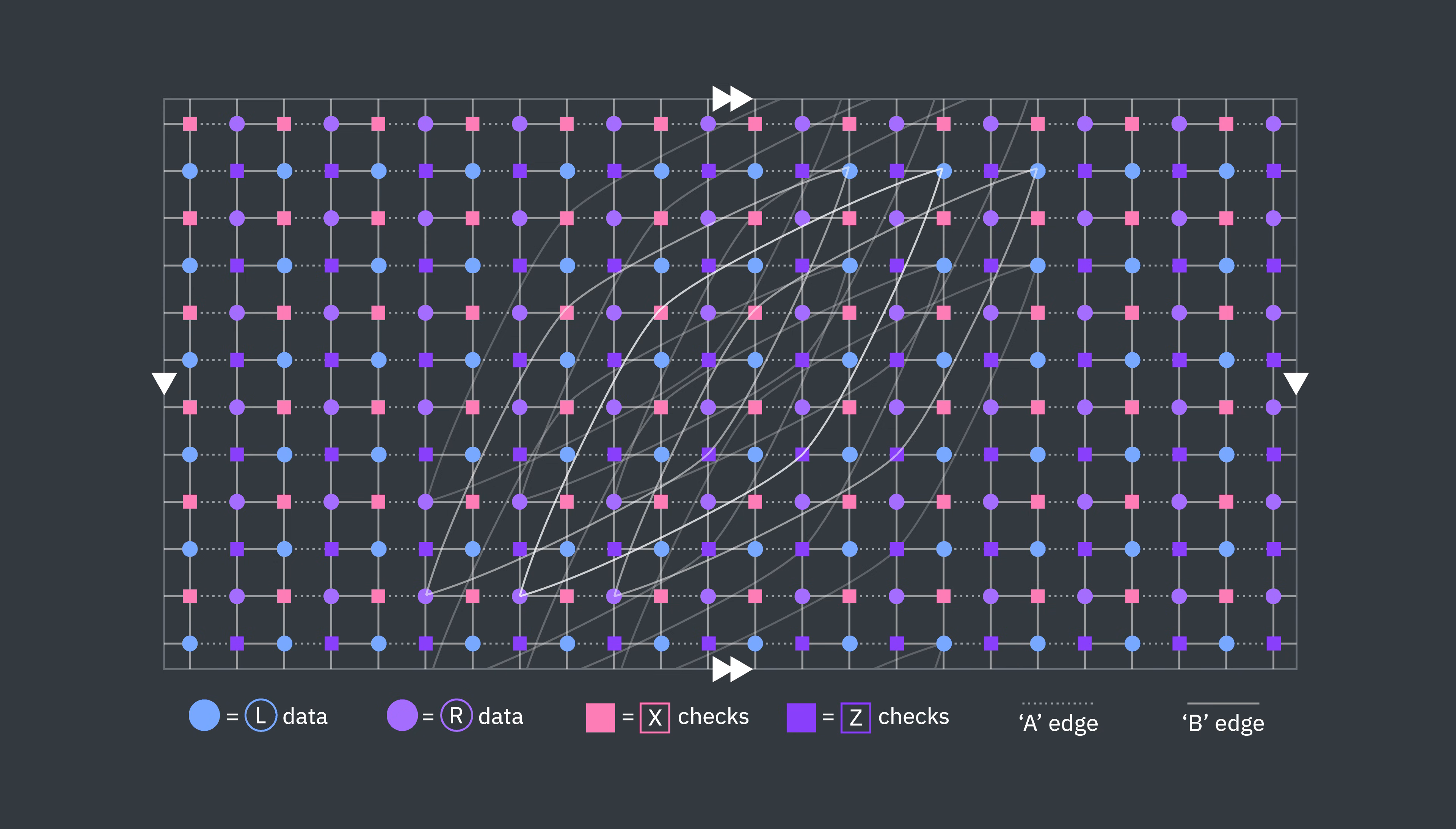A diagram of a BB code, called a Tanner graph, shows how physical qubits are interconnected and which sets of checks are performed. These checks allow the logical qubits to remain intact when some of the physical qubits suffer noise, provided that the error rate stays below a certain threshold. Note that this is being done on a square lattice.